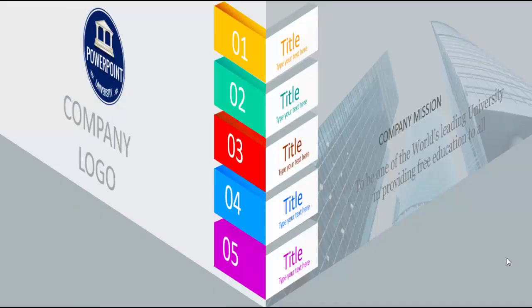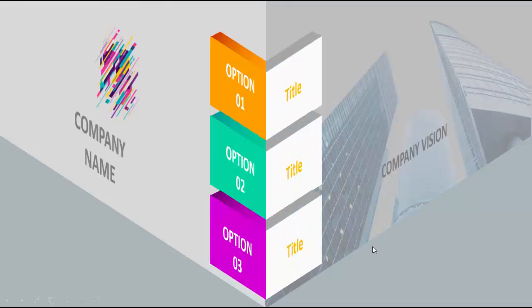Hello and welcome to my YouTube channel PowerPoint University. In this tutorial I'm going to show you how to create this five-options wall corner infographic slide. You can see there is a wall where one side I have put a company logo and the company name, then I've added the corner with options up to option five. You can add the title of each option and some text, and on the right side I've added a company mission. I've also created one more slide with three options only.